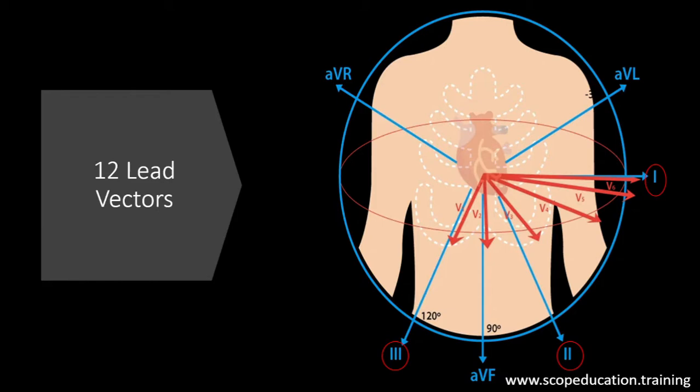The next set of leads are augmented unipolar leads, which will show you a coronal view of the heart and are shown as AVF, AVL, and AVR. The final set of leads are your six precordial leads or chest leads, which show the heart with a transverse view. The leads associated with this are V1 to V6.